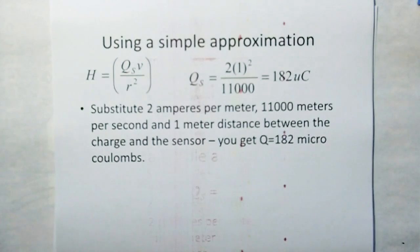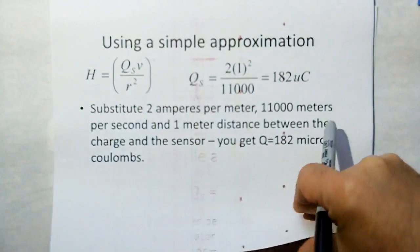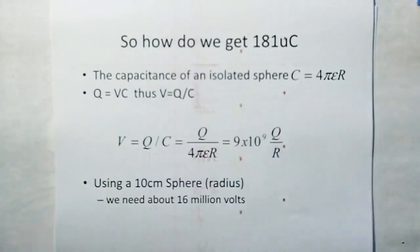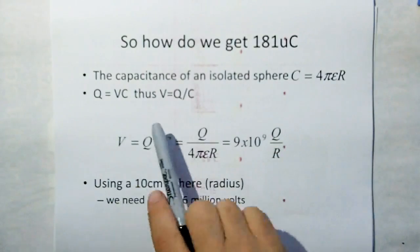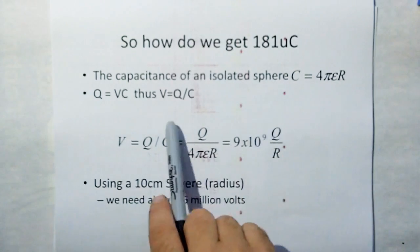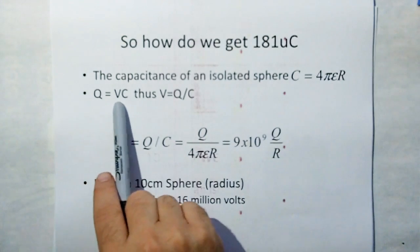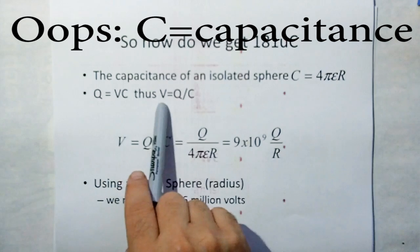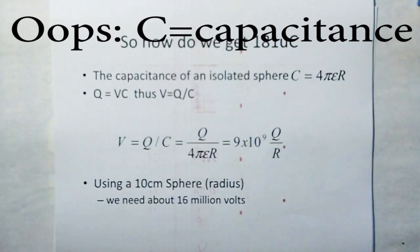But what voltage do I have to put on that sphere to get 182 microcoulombs? Well, if you do all the work and do the capacitance of a sphere, charge is equal to voltage times current, and then divide for voltage, you end up with about 16 million volts for a 10 centimeter sphere.